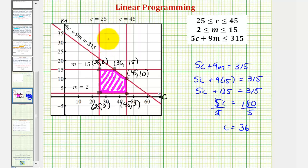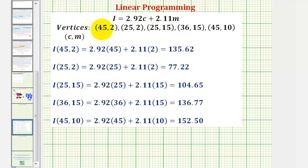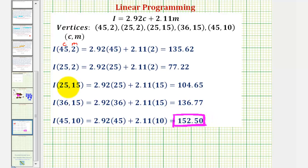Our last step is to take the coordinates of each of these points and substitute them into our income equation, because the maximum income will occur at one of these vertices. Remember, here was our income equation, and for each point, the first coordinate is the value of C and the second coordinate is the value of M. Looking at all these values, the maximum income is $152.50 when C equals 45 and M equals 10. Which means to maximize the income, the restaurant should make and sell 45 dozen white chocolate blizzards and 10 dozen mint breezes.